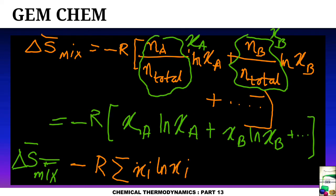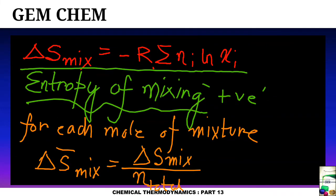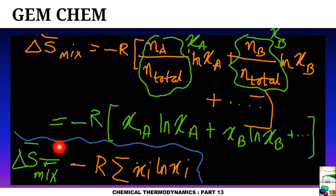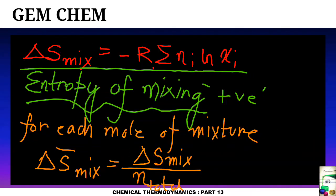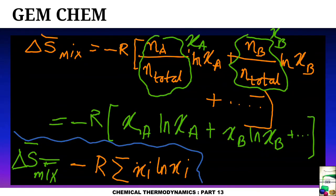So we have obtained two formulas for entropy of mixing. The first, ΔS_mix = −R · Σ N_i · ln X_i, is used in the general case when the number of moles is known. The second, ΔS̄_mix = −R · Σ X_i · ln X_i, is used per mole of mixture, using mole fractions instead of number of moles. This concludes the entropy of mixing topic.